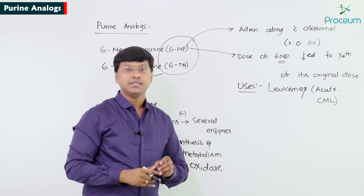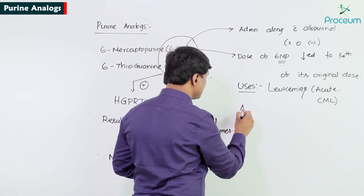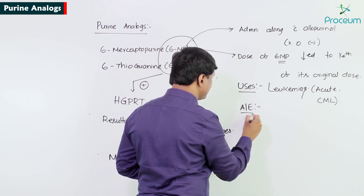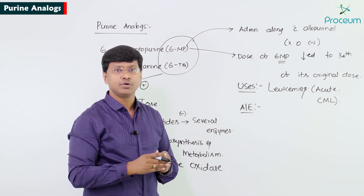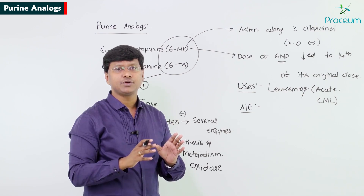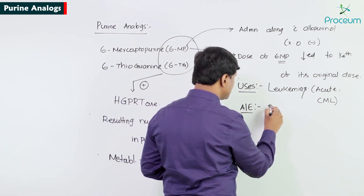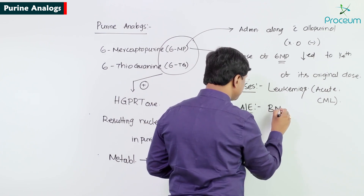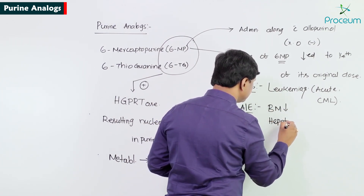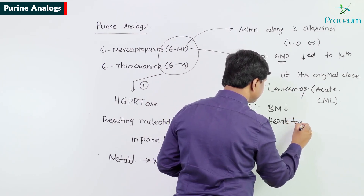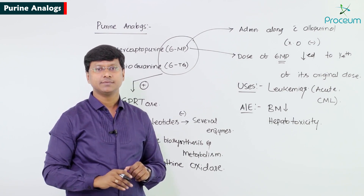The adverse effects of 6-mercaptopurine and 6-thioguanine include bone marrow suppression. Hepatotoxicity can also occur with these drugs.